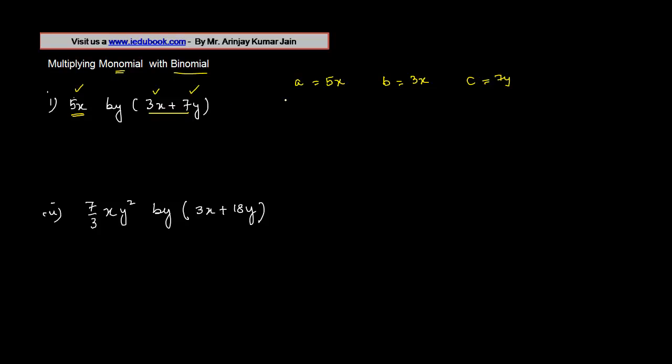Then this equation will actually look something like this: a into b plus c. But we know that when you have to multiply it like this, a into b plus c is equal to a into b plus a into c.